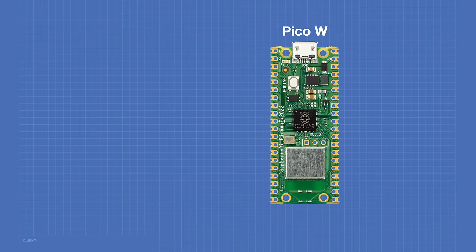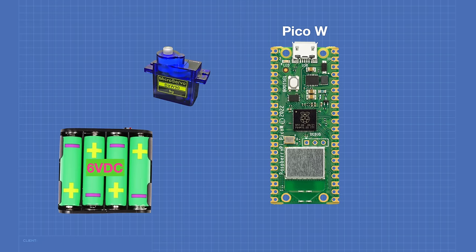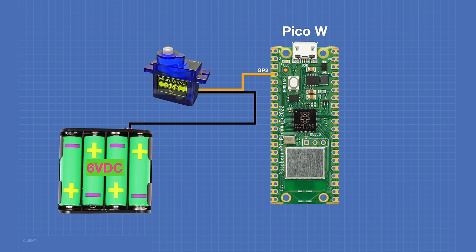For this experiment we'll use a Raspberry Pi Pico-W and a small SG90 or equivalent hobby servo motor, plus a power supply of 5 to 6 volts DC — I'm using a 6V pack with four AA batteries. Connect the servo's control lead (usually orange) to GPIO pin 2 on the Pico-W. Connect the servo ground (brown or black wire) to the negative side of the power supply and to a ground pin on the Pico. Connect the servo's power lead to the positive side of the power supply. That completes the wiring.